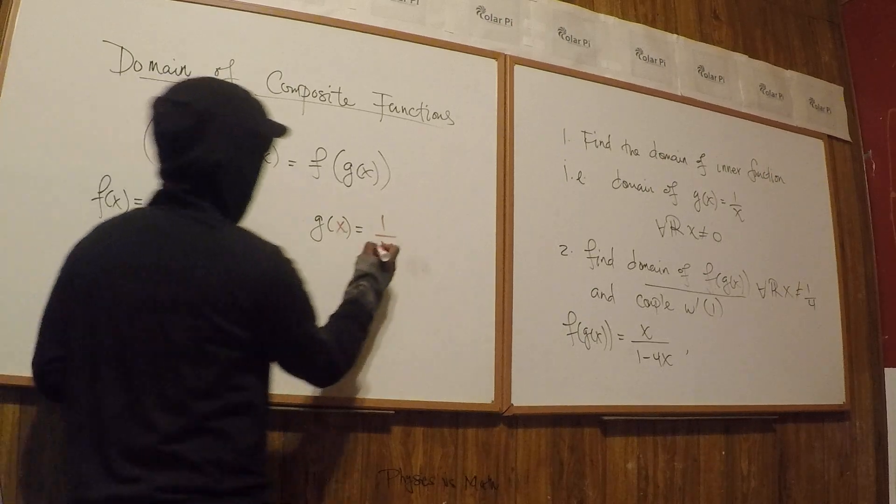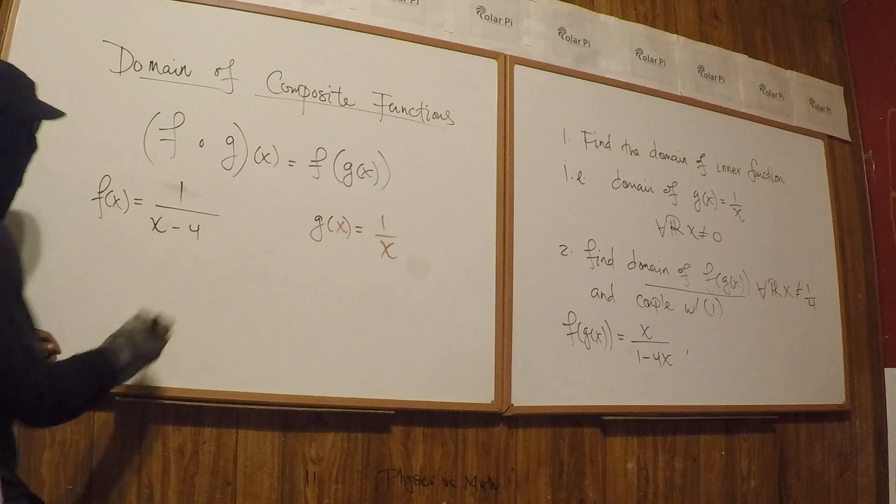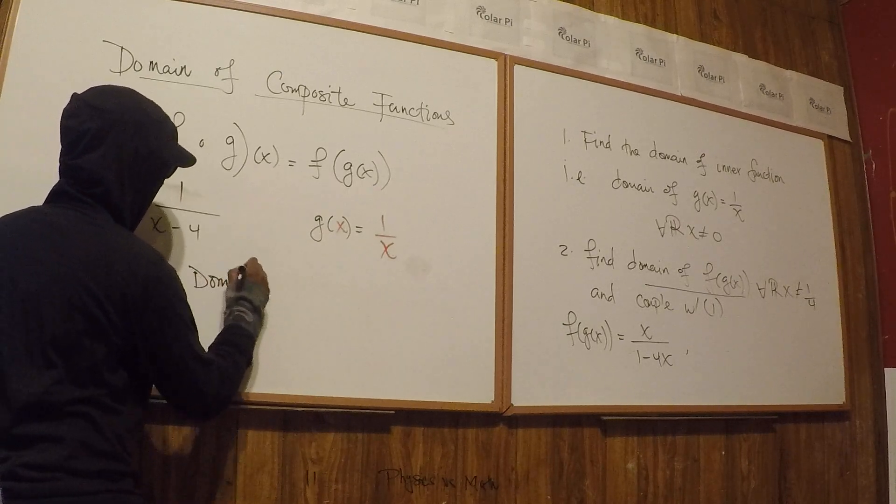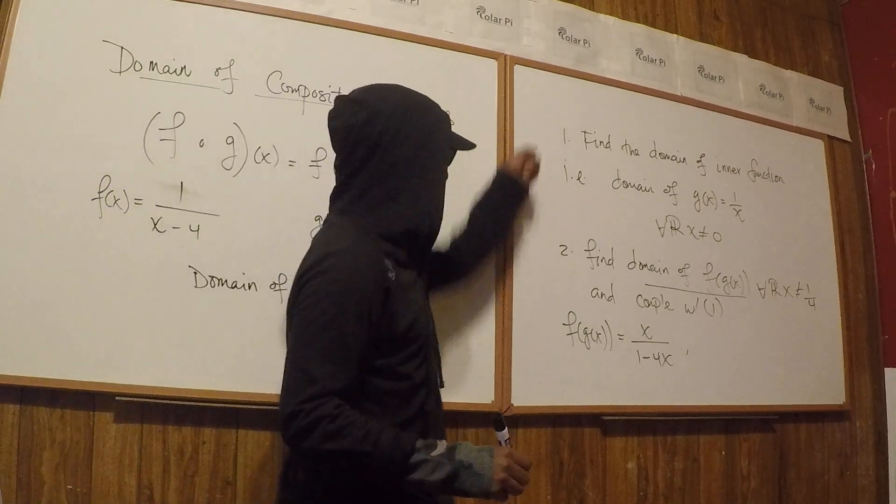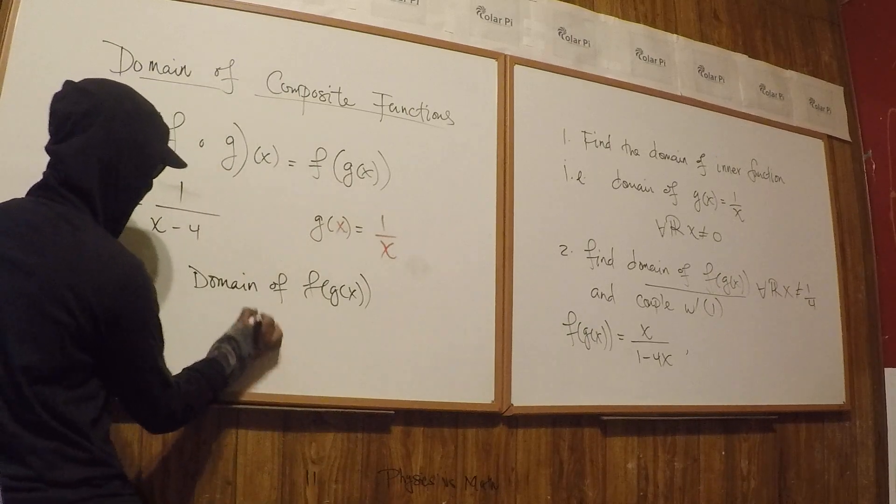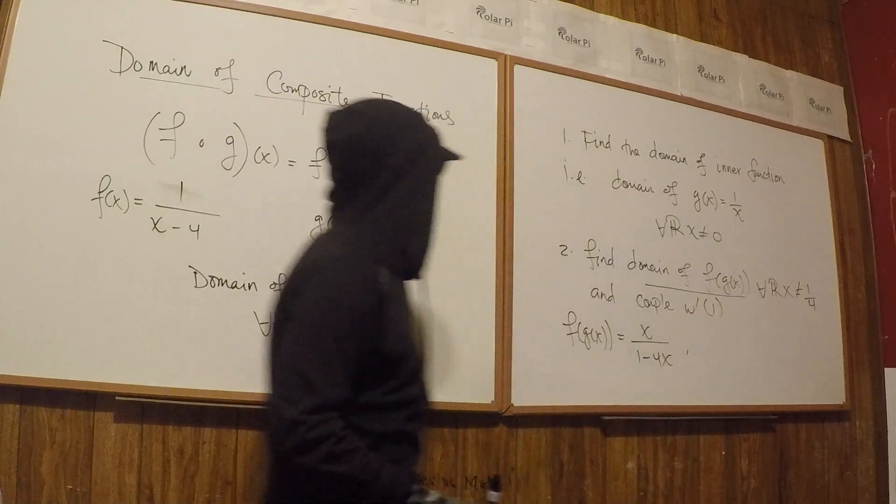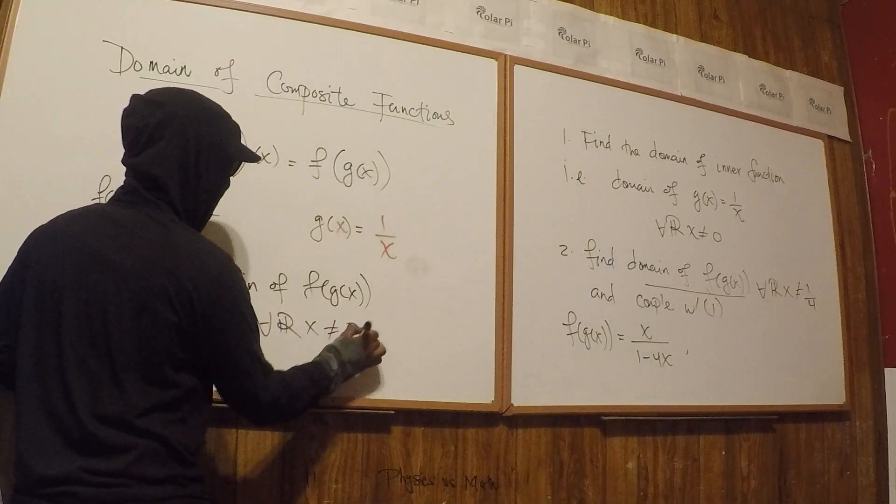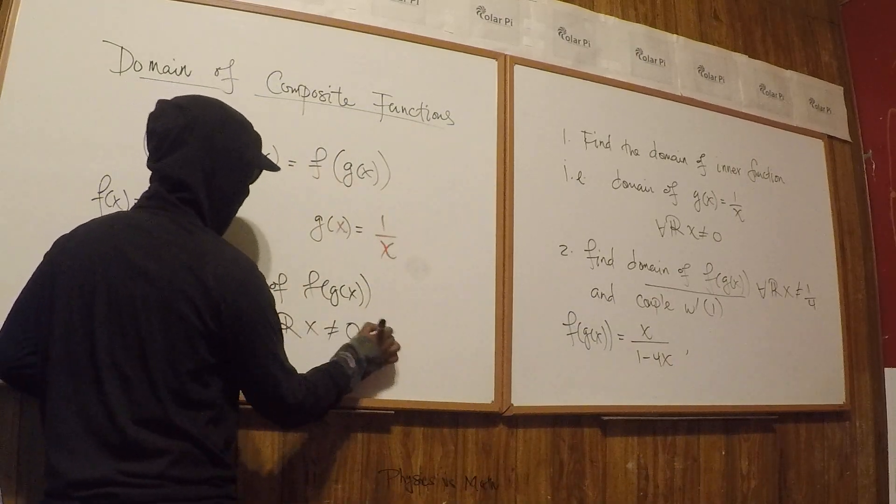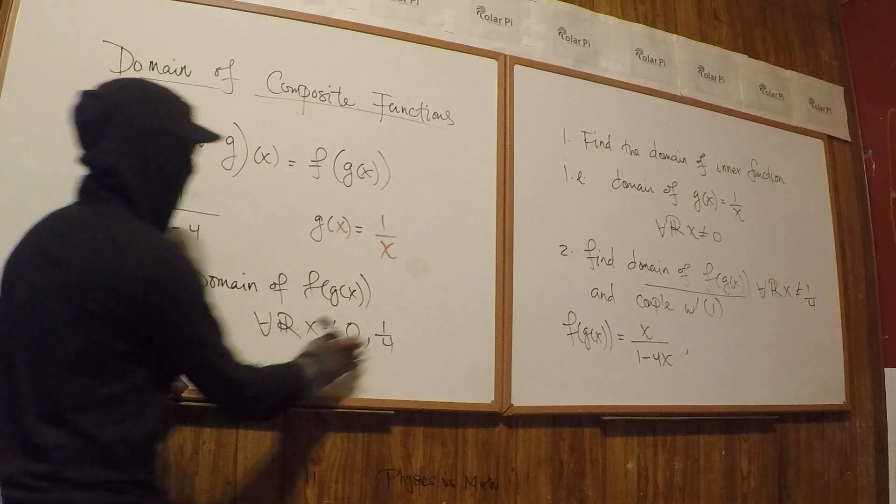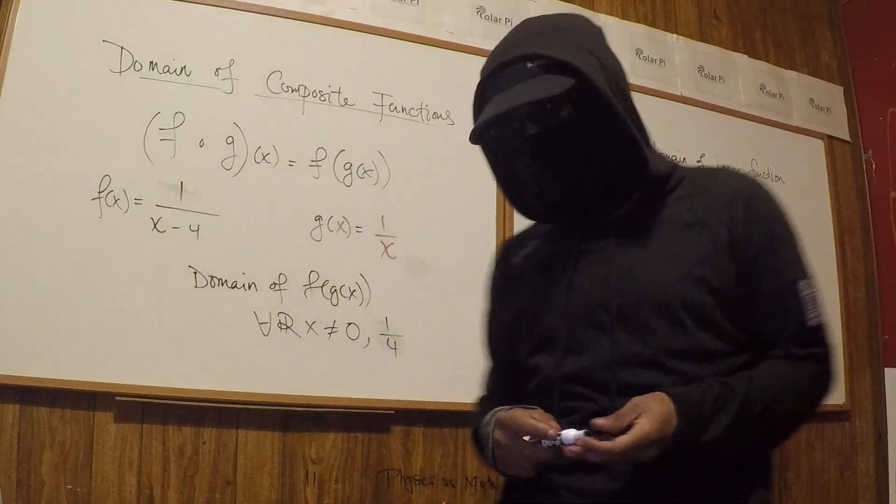So to answer the question of domain of f of g of x, we put one and two together. So it would be all real x not equal to, from one we'd excluded zero because g of x doesn't allow zero, and then in the composition, in the composite, we're not allowed a quarter. So all real x not equal to zero or a quarter is how we answer this question.